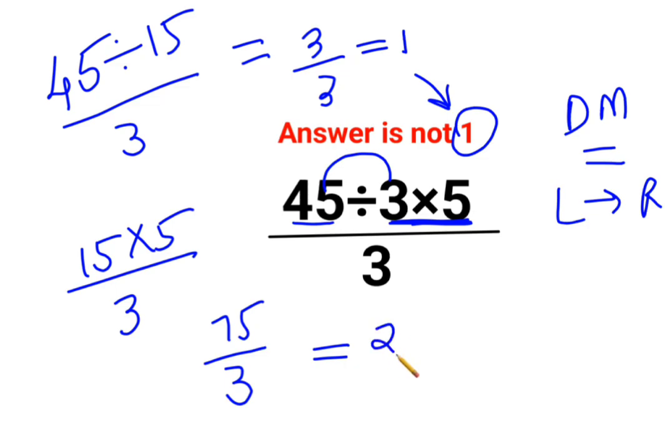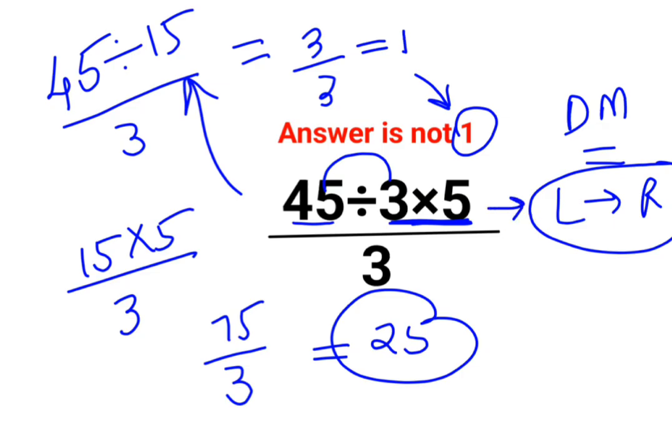The answer for this question is supposed to be 25 and not 1. See, please understand in sums like these, always remember you will have to go from left to right. No matter how tempting this looks, this entire thing looks so easy. But please understand you have to follow rules in mathematics. I hope this is very clear to everyone.